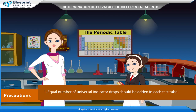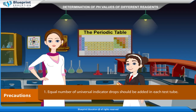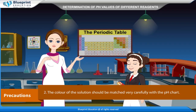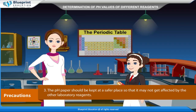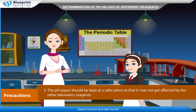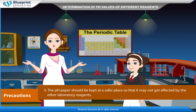Precautions: Equal number of universal indicator drops should be added in each test tube. The color of the solution should be matched very carefully with the pH chart. The pH paper should be kept in a safe place so that it is not affected by other laboratory reagents.